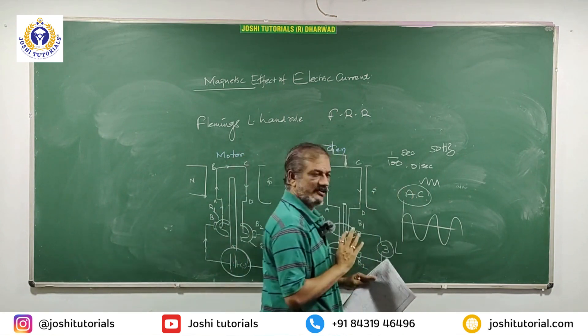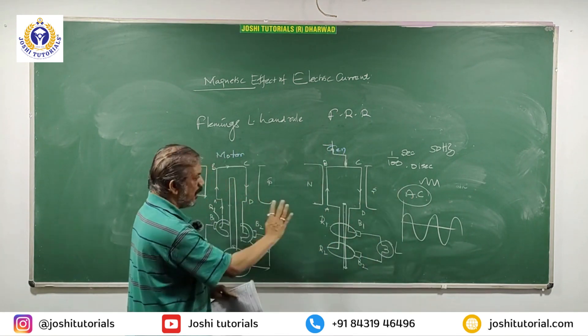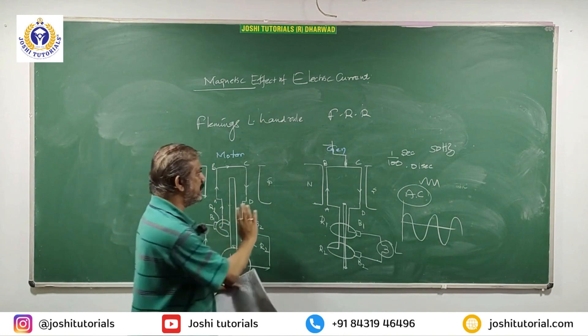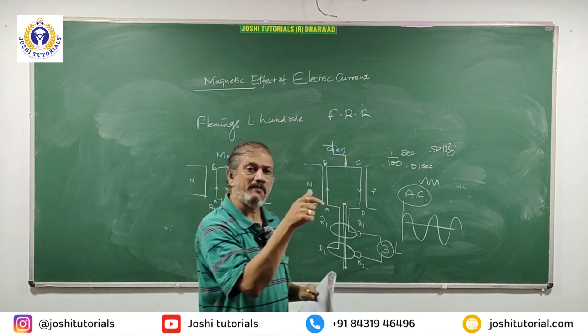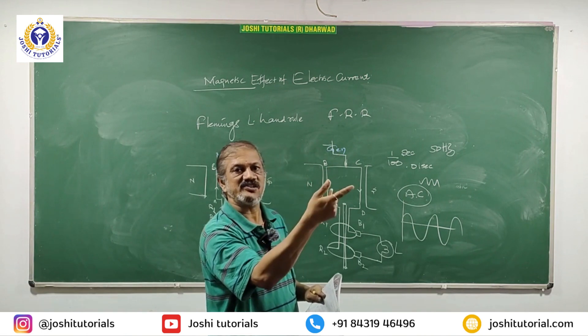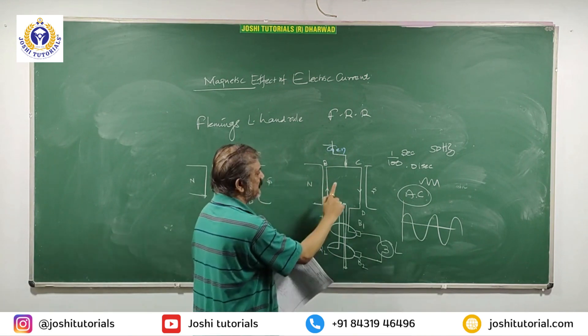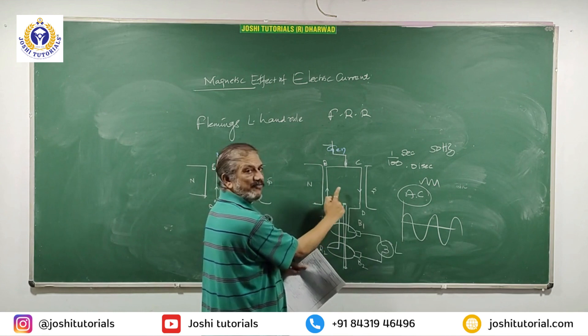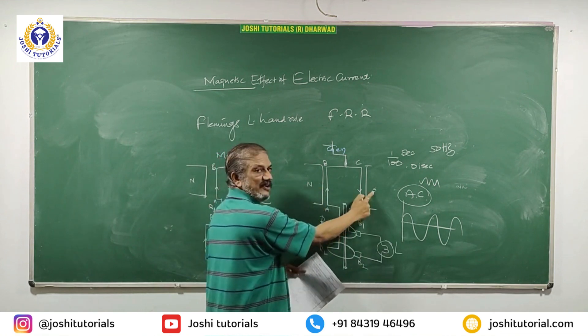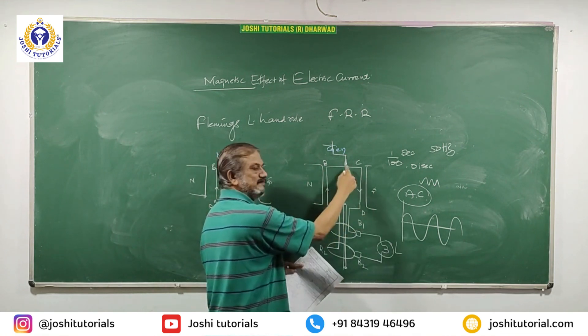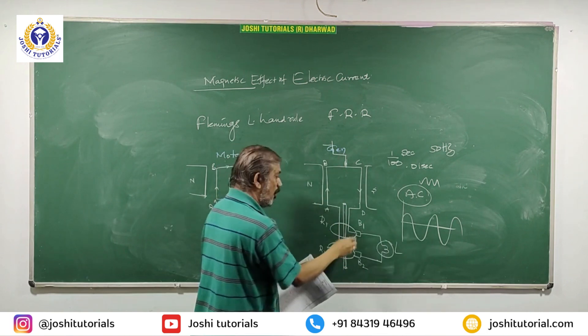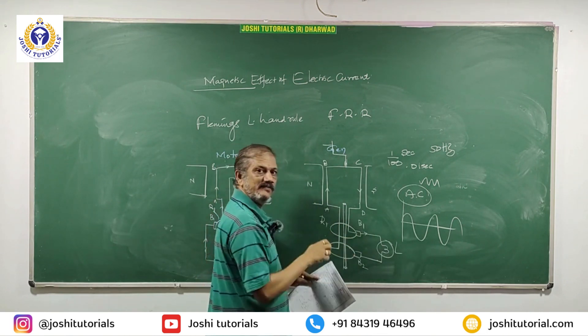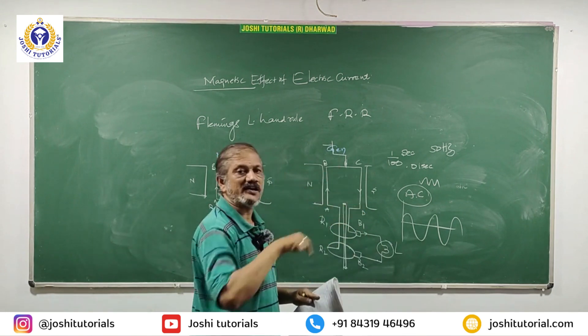AC is used. That's why you must know how to draw the diagram. Generator works on EMI, electromagnetic induction. Whenever there is a change in the magnetic field linking with the coil, always induces EMF, always produces current. That current is called induced current.